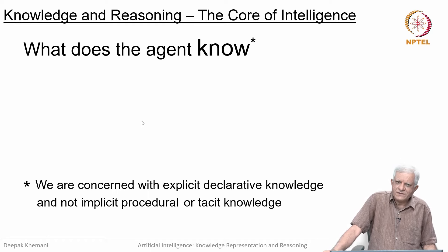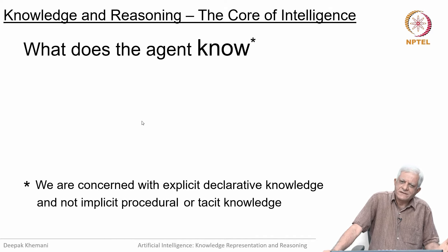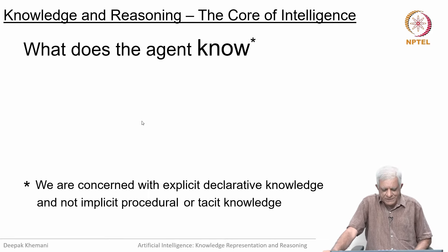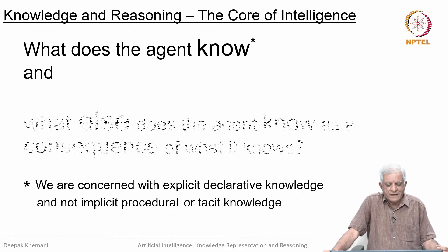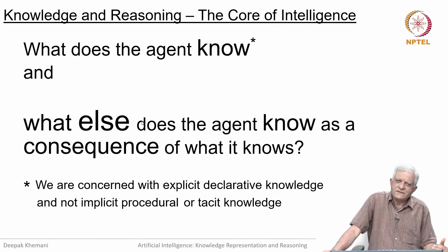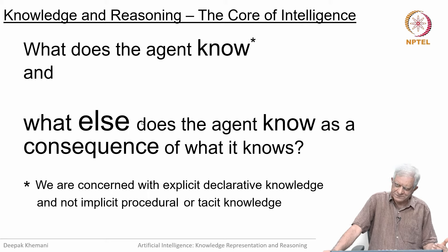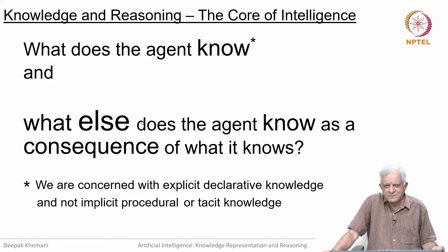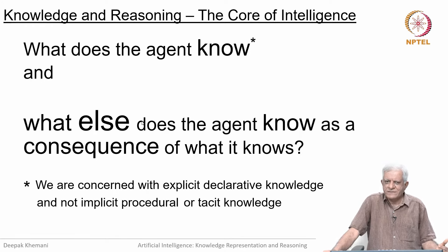What does an agent know? This is true for non-human agents also. Dogs know things and other animals know things. But what humans are particularly good at is knowing things and, as a consequence, inferring what else they know — you know some things and then you make some inferences and you know some other things. This kind of reasoning is what we are interested in capturing in this course. How do you represent what you know, and how do you use what you have represented to compute other things?